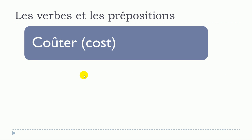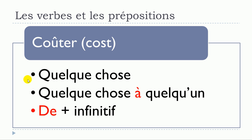The next verb is coûter. Coûter quelque chose — pas de préposition. Or coûter quelque chose à quelqu'un. Or coûter de plus verbe à l'infinitif. So: coûter quelque chose, coûter quelque chose à quelqu'un, coûter de plus infinitif.